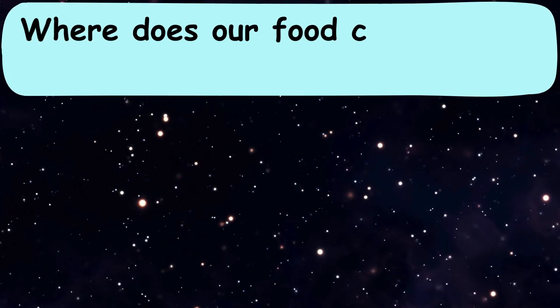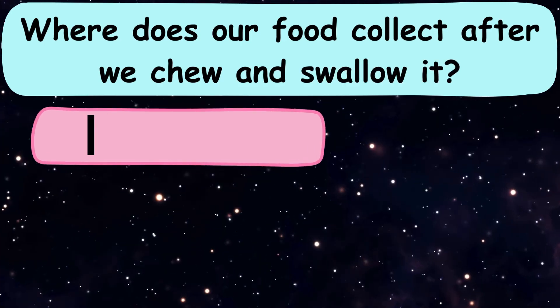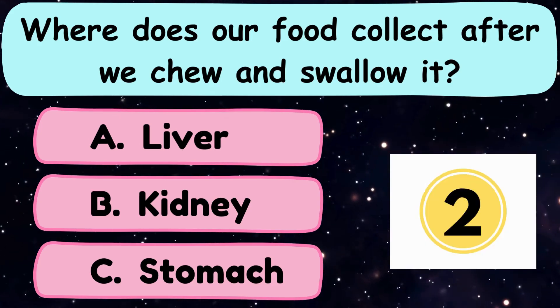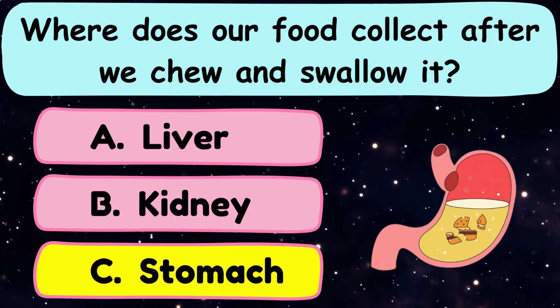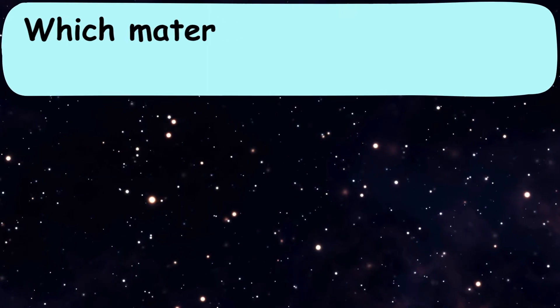Question number 32. Where does our food collect after we chew and swallow it? A. Liver, B. Kidney, or C. Stomach? And the answer is option C. Stomach.